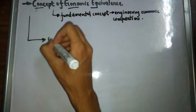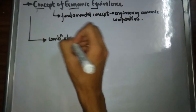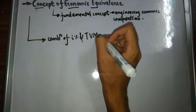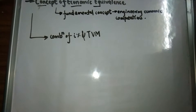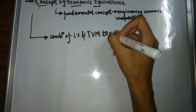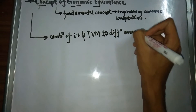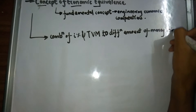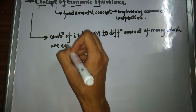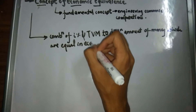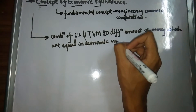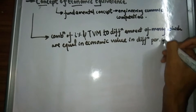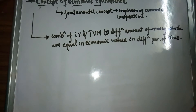Economic equivalence is simply the combination of interest rate (i) and time value of money (TVM), used to determine different amounts of money which are equal in terms of economic value in different periods of time.